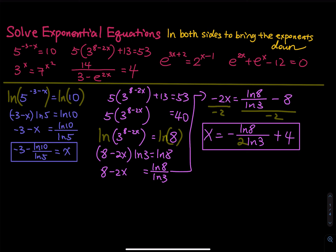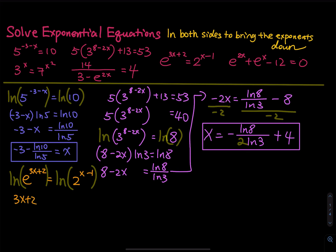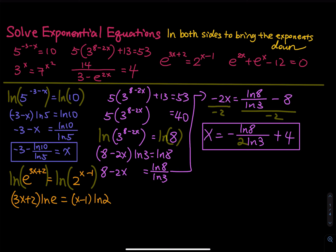The next problem: e to the 3x plus 2 equals to 2 to the x minus 1. The variable is in the exponent, so we can ln both sides immediately. Bringing the power down, we have 3x plus 2 times ln e, and ln e equals 1. On the right side, we have x minus 1 times ln2. So 3x plus 2 equals x times ln2 minus ln2.